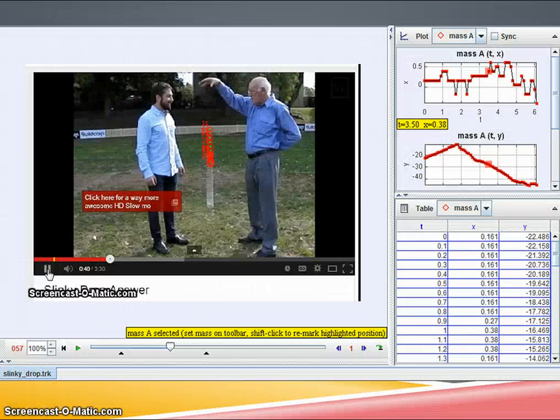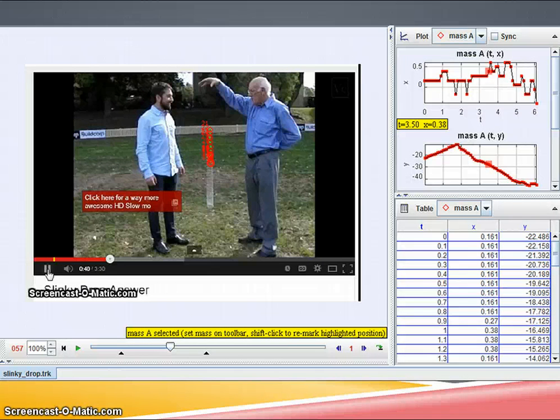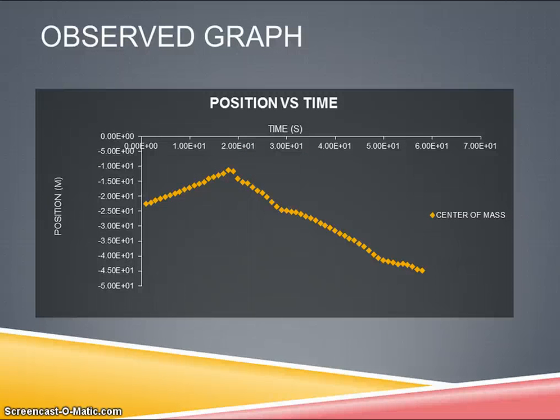As you can see in the video, when a slinky is dropped, the bottom of the slinky does not change in position until the top of the slinky reaches it. I tracked the estimated position at the center of mass in Tracker and found the graph of position versus time, which is shown here.